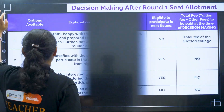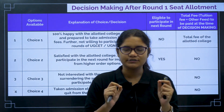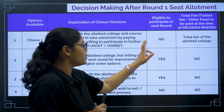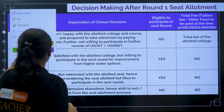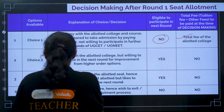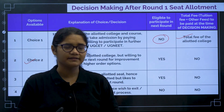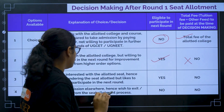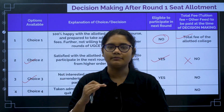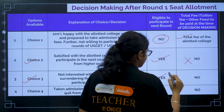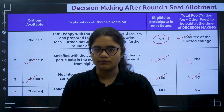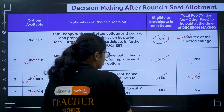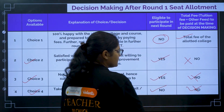Before we get started, let's understand all 4 choices. Choice 1 means you are going to join the college you are allotted — you cannot participate in further rounds of counselling and you must pay the college fees now. Choice 2 means you are satisfied but want to check for a better college — you will be considered for next rounds and need not pay fees now. Choice 3 means you are not interested in the allotted college but want the next round — no fees required. Choice 4 means you have joined elsewhere or want to exit the counselling process entirely — no fees, no further participation.